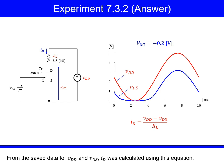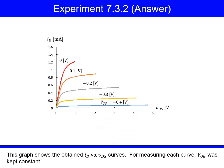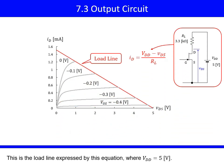From the saved data for VDD and VDS, ID was calculated using this equation. This graph shows the obtained ID versus VDS curves. For measuring each curve, VGG was kept constant. This is the load line expressed by this equation, where VDD equals 5 volts.